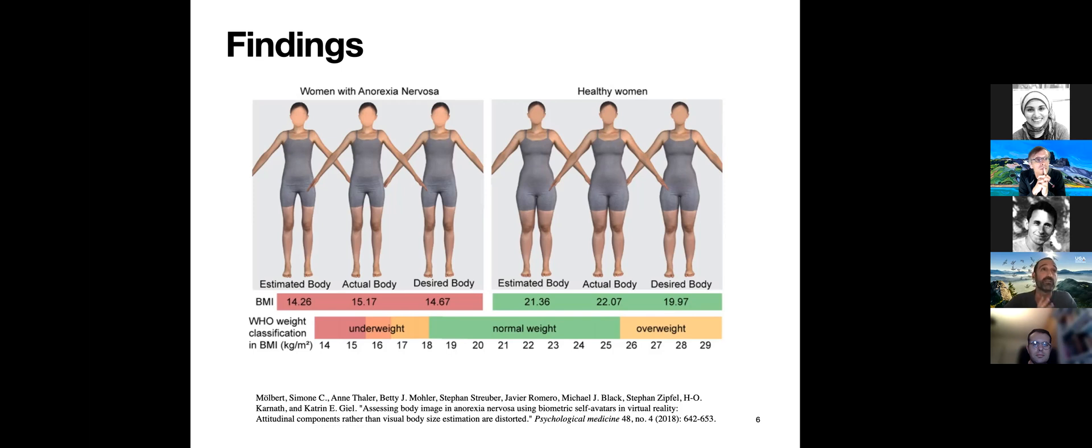When addressing the anorexia nervosa subjects, in the middle they have an actual body with a BMI of 15, which is already underweight. But when asked to estimate their body, they weren't that far off. They didn't estimate the chubby person we saw in the mirror video. They estimated a body pretty close to their actual body. Furthermore, when asked how they want to be, their desired body is even closer to their actual body. This literally changed perception in the medical domain on how people are addressing anorexia nervosa, because now they know it's not a perception problem, it's an attitude towards how they want to be. SMPL played a pretty important role.